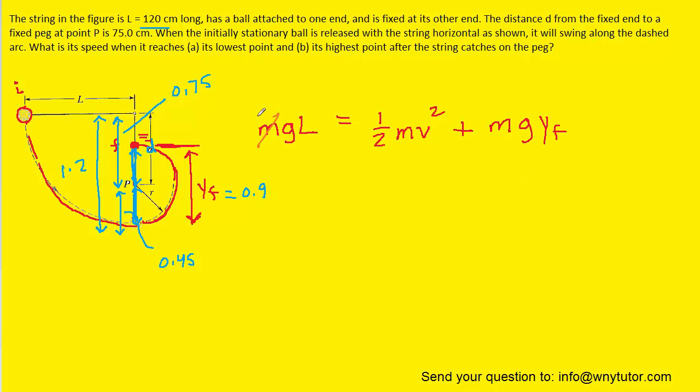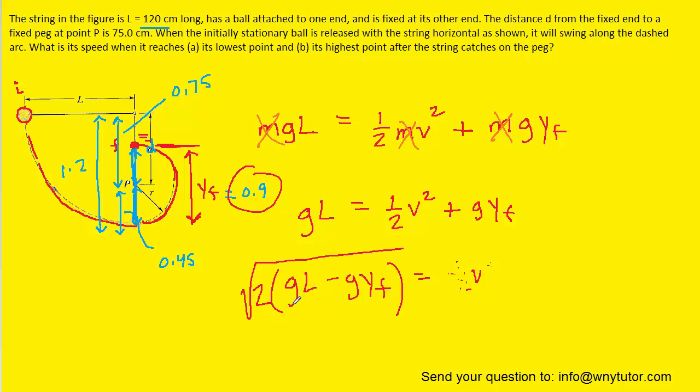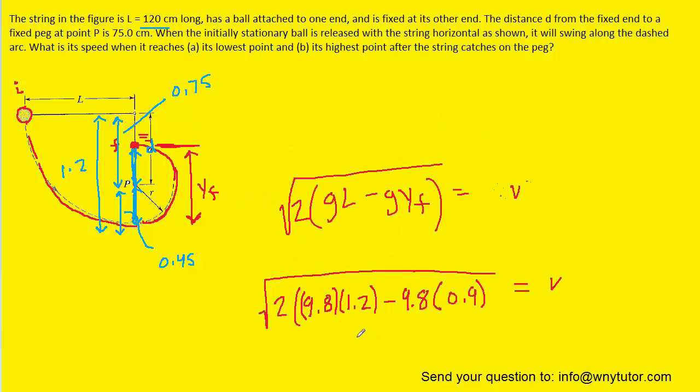Mass appears in each term so we can eliminate it. We solve the equation for speed v by subtracting g times y final to the other side, multiplying both sides by 2 to eliminate the one-half, and taking the square root to isolate the speed. L is the full length of the string, 1.2 meters, y final is 0.9 meters, and g is 9.8. When we calculate that, we get roughly 2.42 meters per second. This is the correct answer to part B.